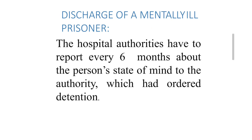Discharge of a mentally ill prisoner: the hospital authorities must report every 6 months about the person's state of mind to the authority which ordered detention. For example, if a patient committed a crime due to a psychiatric problem and the court gave a 10-year sentence, the patient would be sent to a psychiatric hospital instead of normal jail and placed in a criminal ward. Every 6 months, the psychiatric hospital sends a report to the court authorities and the responsible police station about the patient's progress.